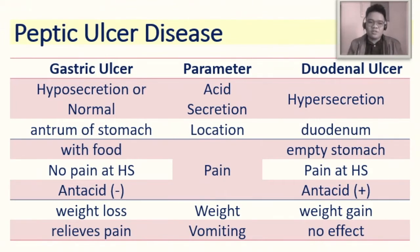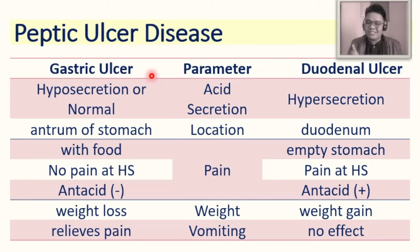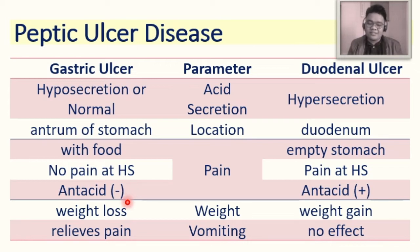Let's differentiate gastric ulcer and duodenal ulcer using this comparison table. The pain is described as burning, aching, cramp-like, and gnawing. For acid secretion: gastric ulcer has hyposecretion or normal levels — the main problem is not the acid but the ulcer itself — whereas duodenal ulcer has hypersecretion of acid. As a result, pain in gastric ulcer cannot be relieved by antacids, whereas in duodenal ulcer, pain is usually resolved by antacids.